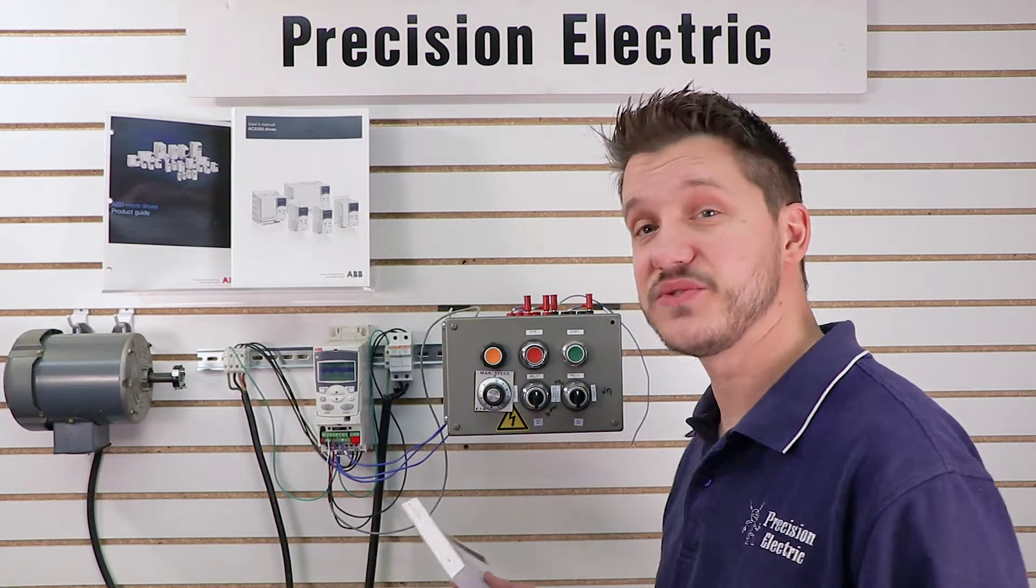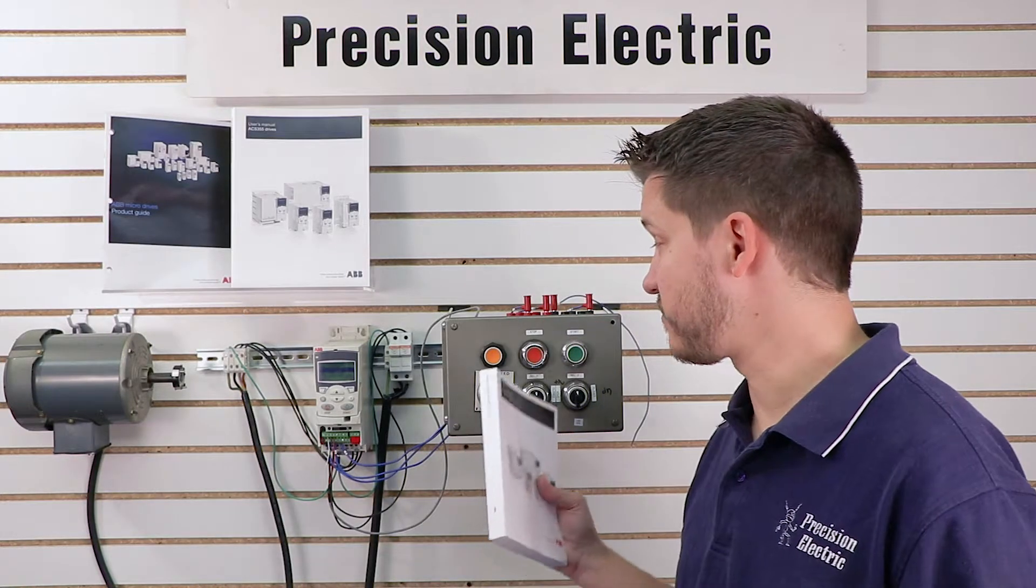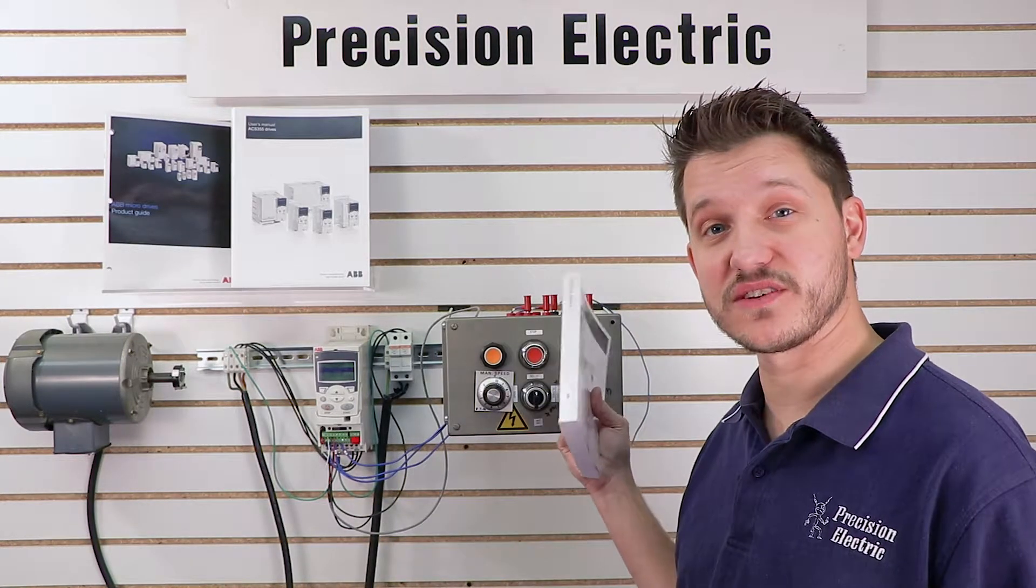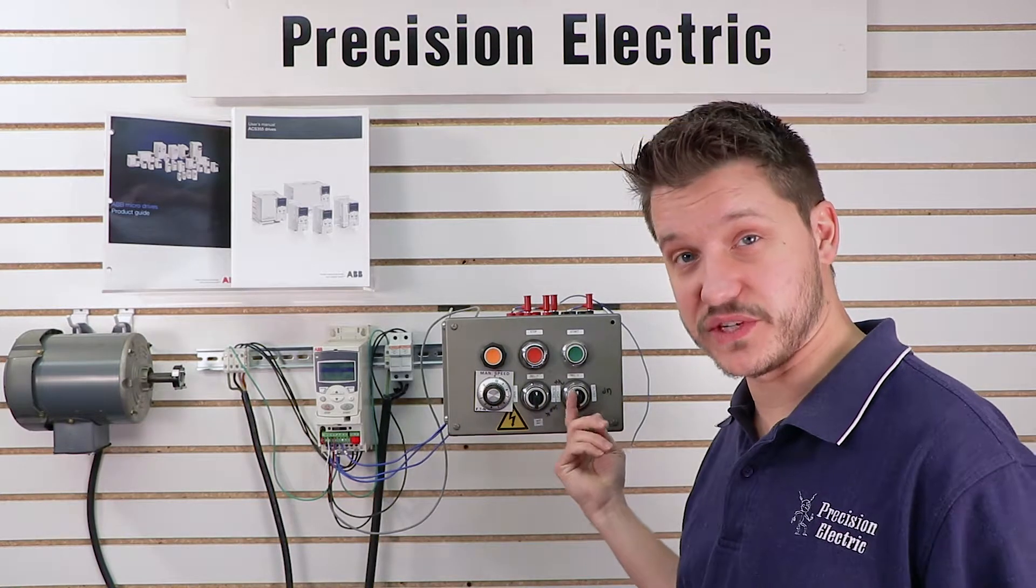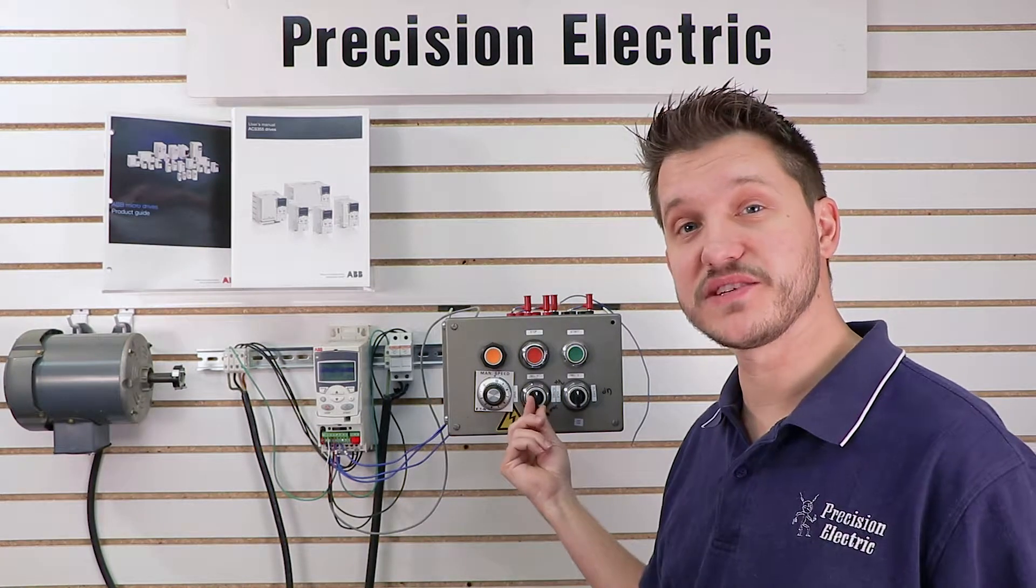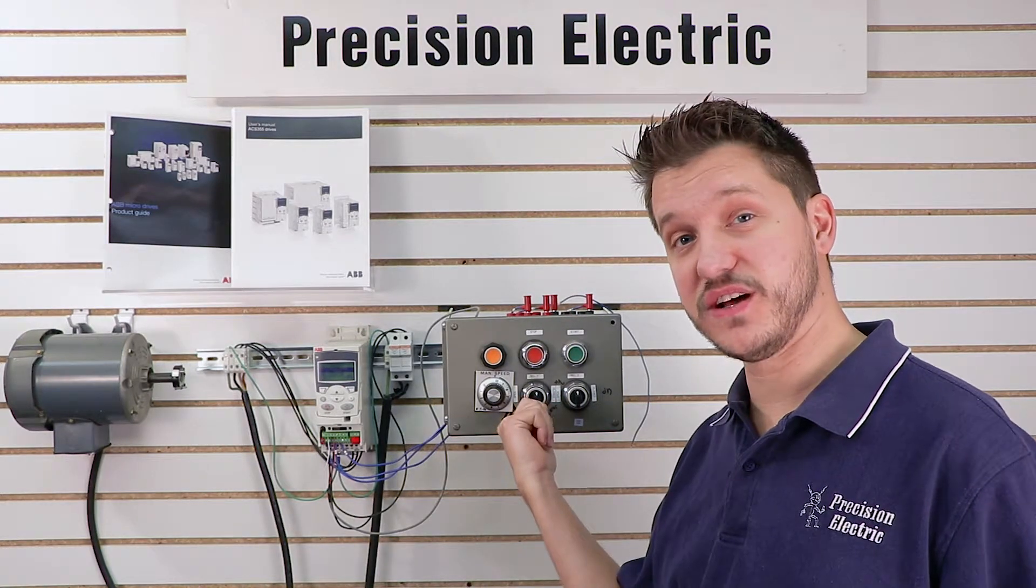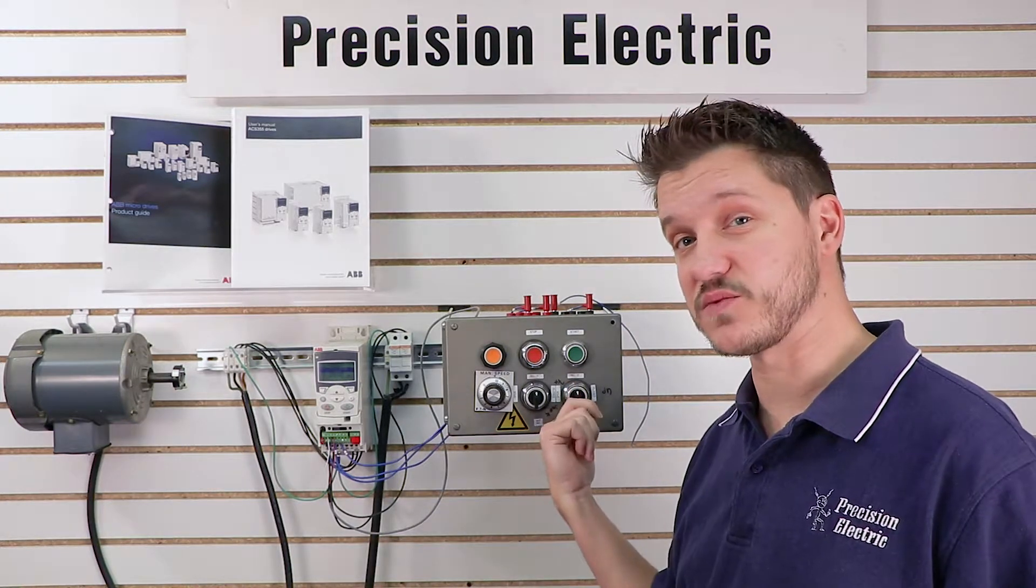So today's video, we're going to continue the ACS 355 series tutorials, and we're going to be covering not the push-button start-stop control like we did in the previous one, instead we're going to be doing selector switch start-stop control. Essentially we need to be able to issue a start command by flipping the switch on, and we can also do forward and reverse by flipping the second switch.